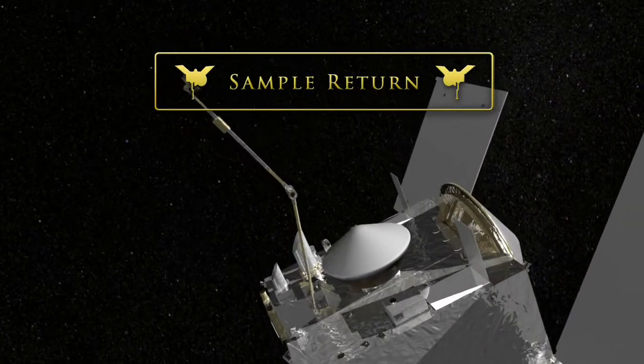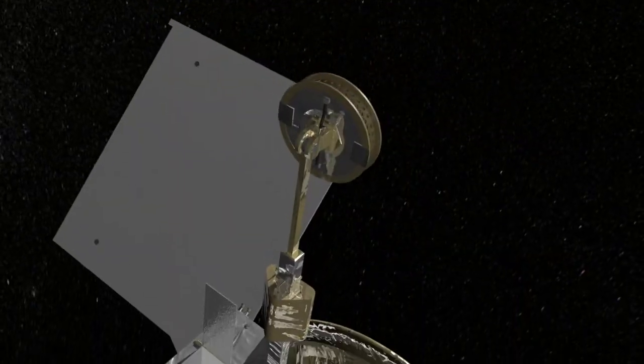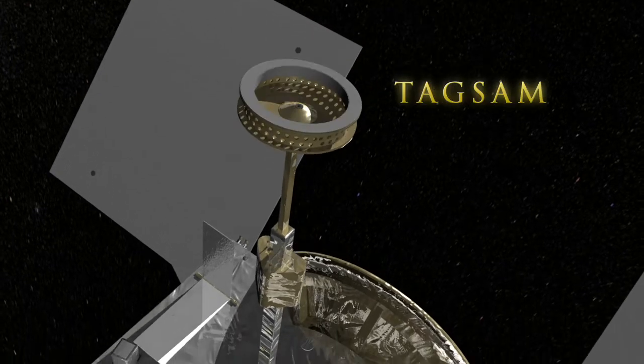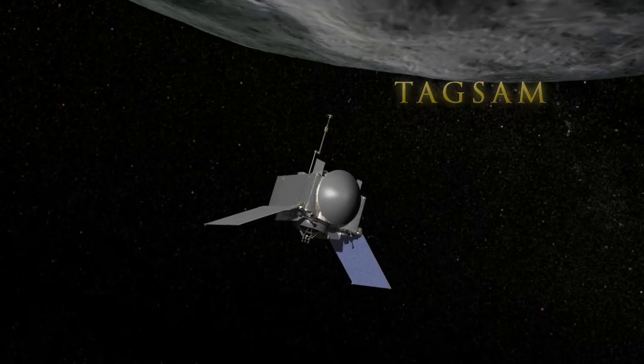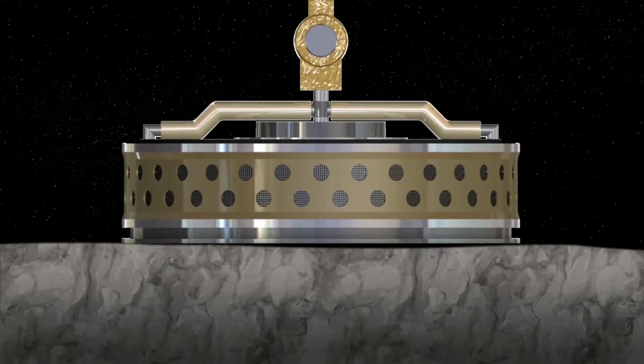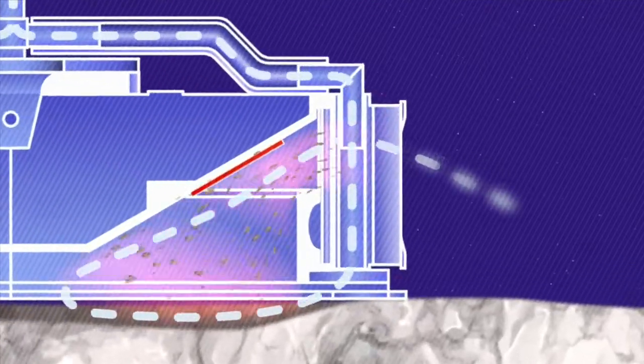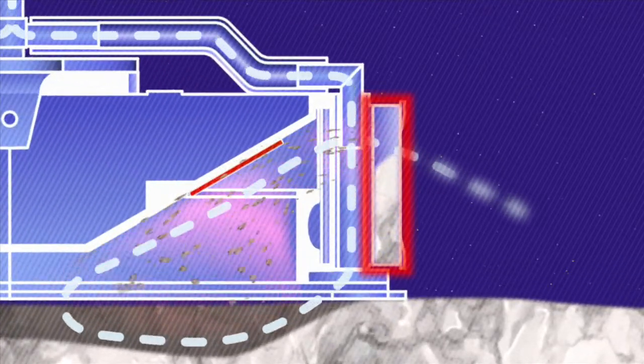The primary mission is retrieving a sample of the asteroid for study on Earth. In 2019, OSIRIS-REx will deploy its Touch-and-Go Sample Acquisition Mechanism, or TAGSAM, and slowly approach the sample site. When the TAGSAM touches the surface, it will release a burst of nitrogen gas, causing loose rocks and soil to flow into the collector.